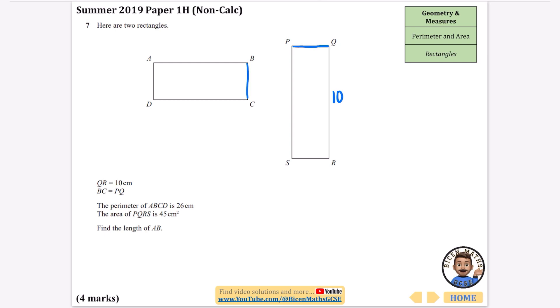It says BC is equal to PQ, so this length is the same as this length. I'm going to highlight it to make it clear that those lengths are the same. The perimeter of ABCD is 26 and the area of PQRS is 45 centimeters squared. Find the length of AB.